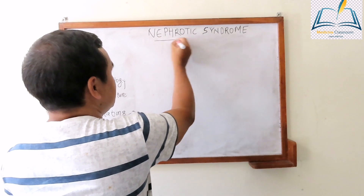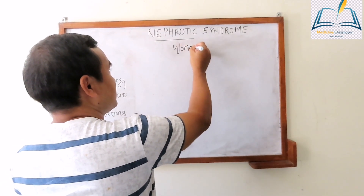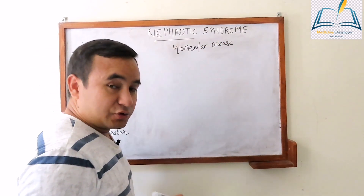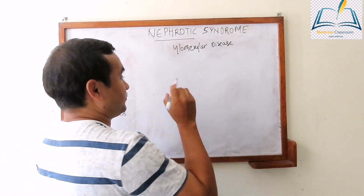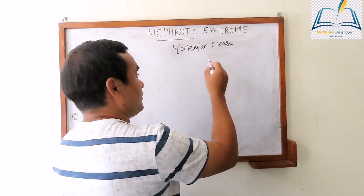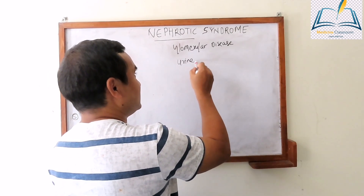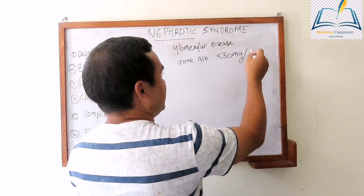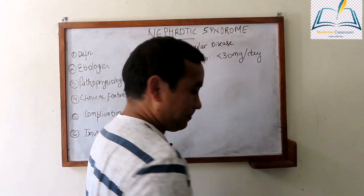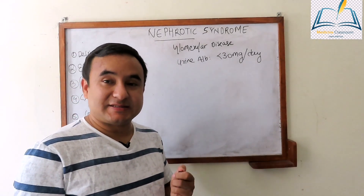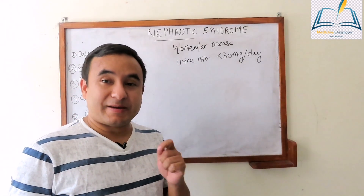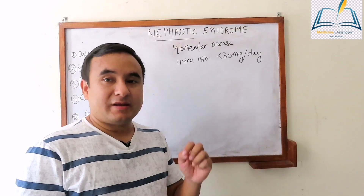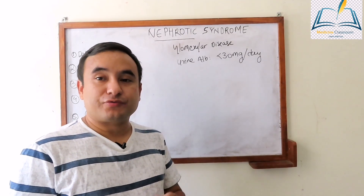Nephrotic syndrome is a glomerular disease. Normally, urine contains less than 30 mg of albumin in a 24-hour sample — we had discussed this when discussing the approach to renal abnormalities.